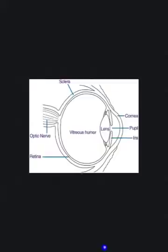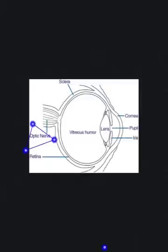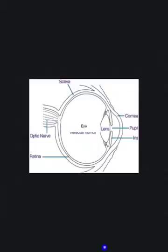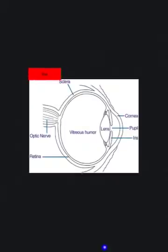With a slightly different laser pointer tool, you can connect lines and focus students in on certain points. You can also attach labels to anything that you're doing, change the color of the label, and then move the label. So even if you're starting with a blank diagram, you can add in the labels and take students through that process.